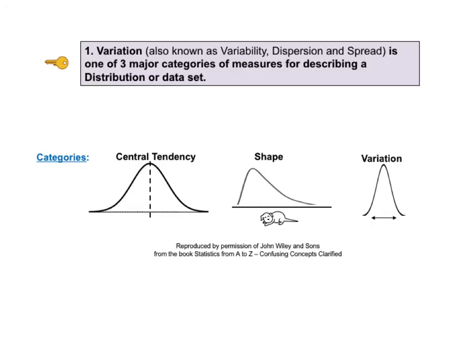Key to understanding number one tells us that variation — also known as variability, dispersion, and spread — is one of three major categories of measures for describing a distribution or data set. These categories are central tendency, which is also known as center, shape, and variation.